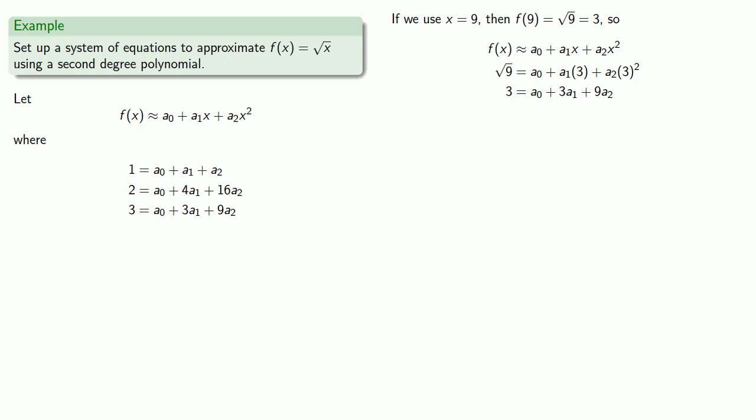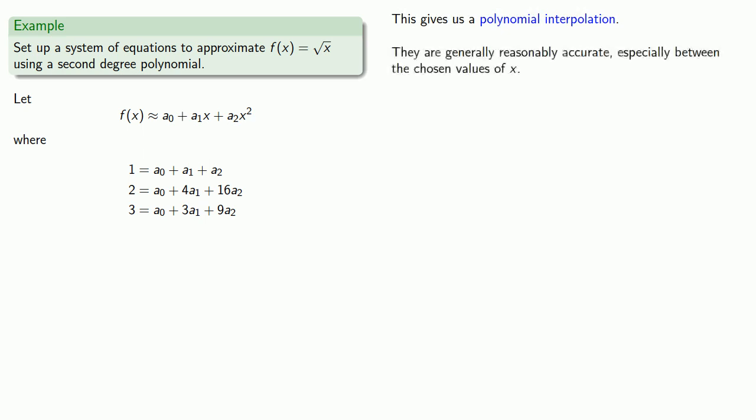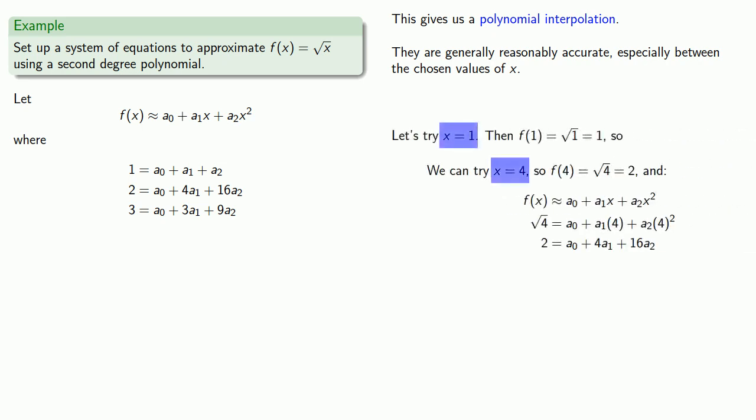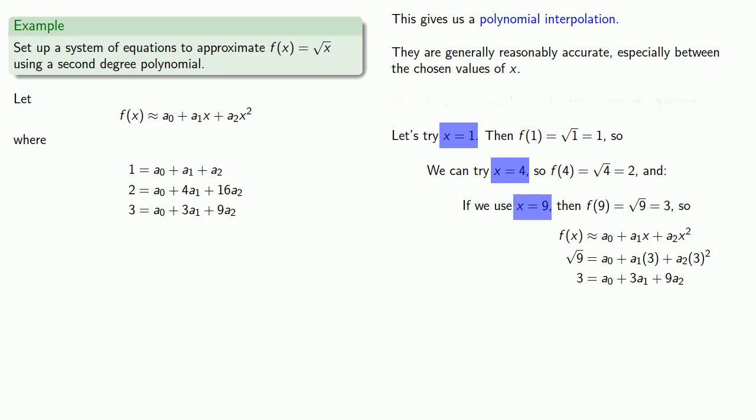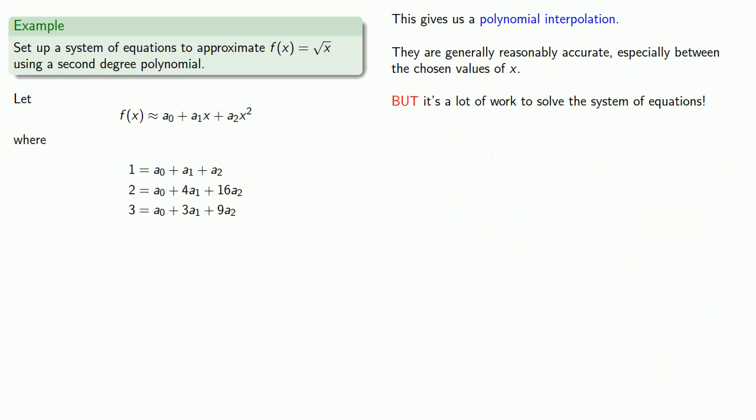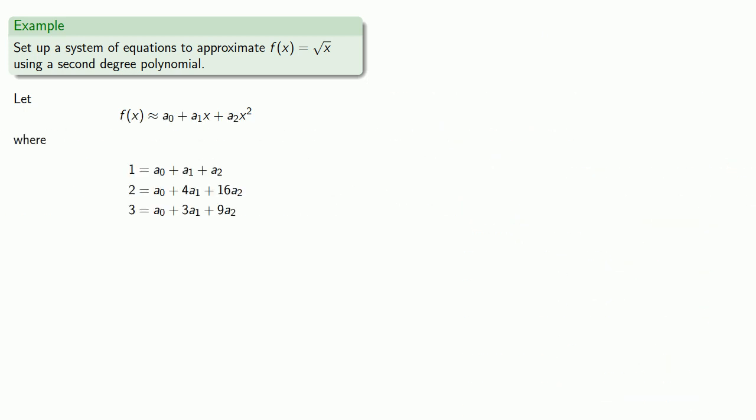Now, this is a system of three equations and three unknowns. If we solve this system for a₀, a₁, and a₂, we'll get a polynomial interpolation. They are generally accurate, especially between the chosen values of x. In this case, we chose x = 1, x = 4, and x = 9. But it's a lot of work to solve this system of equations. So what can we do?